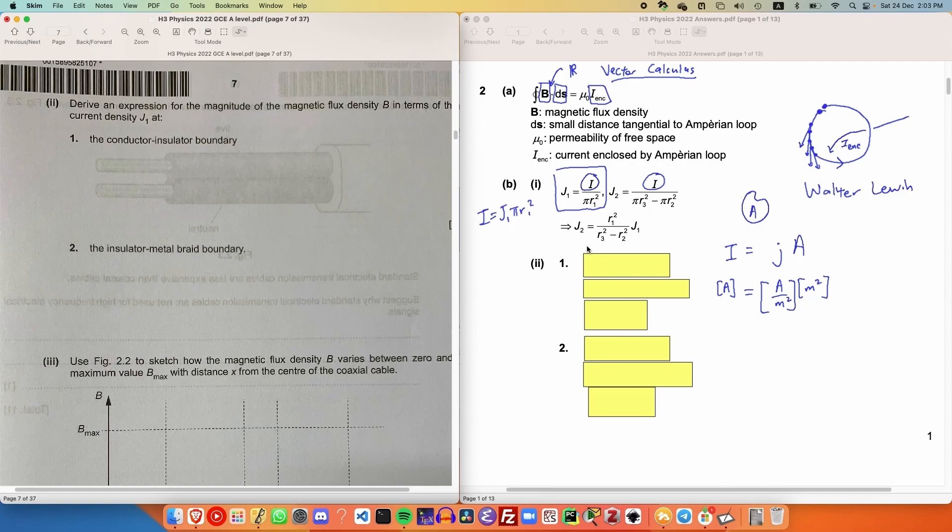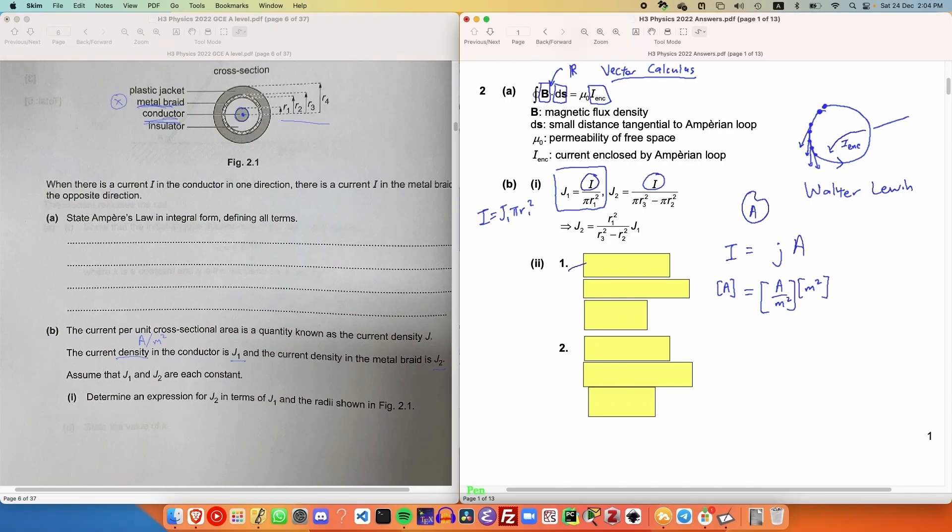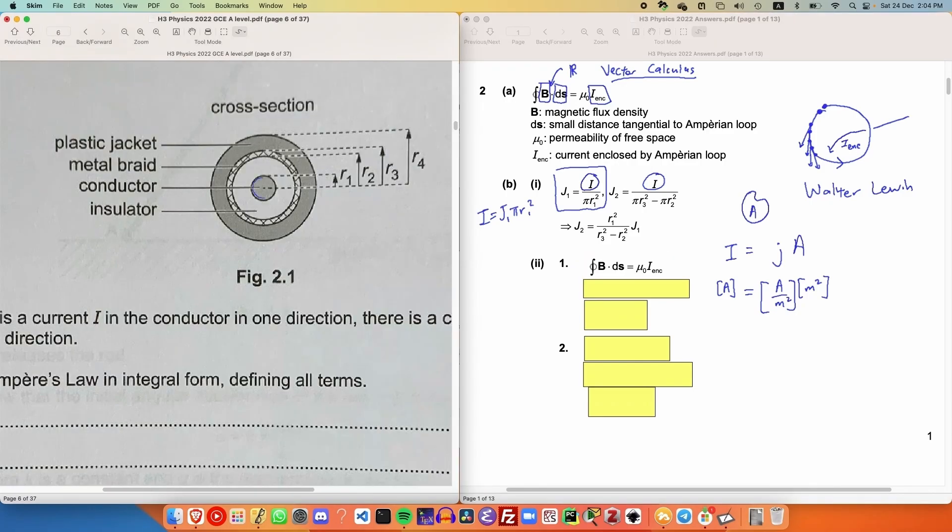Now, part 2b requires us to derive an expression of the magnetic flux density in terms of the current density J1. At the conductor-insulator boundary, at radius R1, we can make use of Ampere's law. In this case, the chosen Ampere loop is the circle of radius R1. Because the setup is rotationally symmetric, we can assert that the magnetic field at every point along this Ampere loop has constant magnitude, and the direction of the magnetic field is tangential to the Ampere loop as well. This allows us to collapse the line integral into merely the multiplication of the magnitude of the magnetic field and the circumference of the Ampere loop.